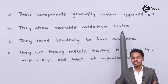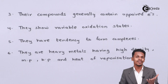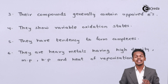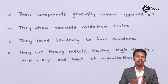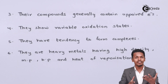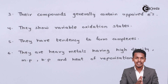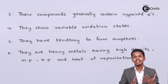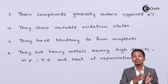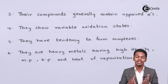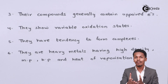They show variable oxidation states. As we discussed in the previous lecture on electronic configuration, the d-orbitals of transition elements can range from 1 to 10 electrons. That's the reason they can acquire unpaired electrons and hence different oxidation states.